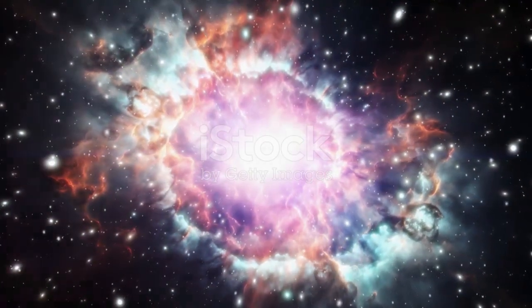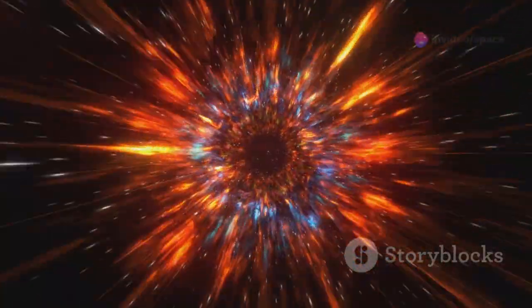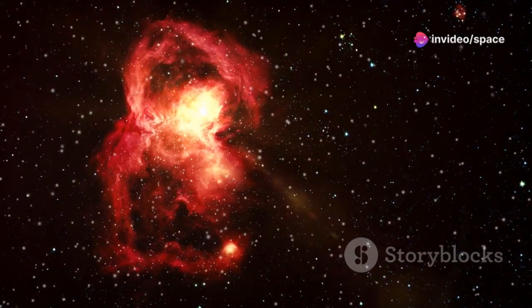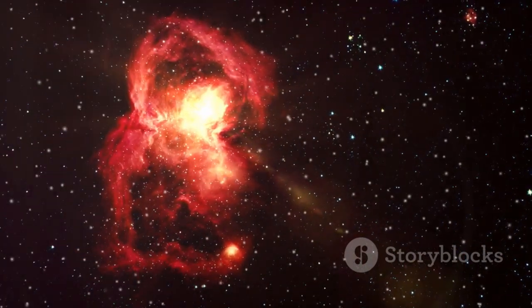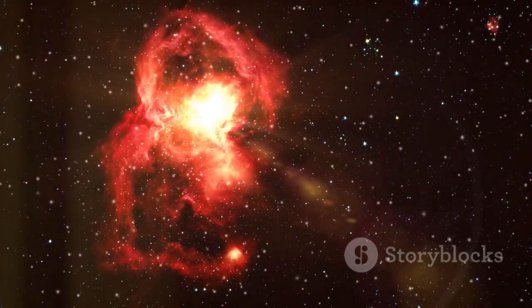Betelgeuse is currently in a state of intense activity. It pulsates irregularly, its brightness fluctuating as it experiences massive convective cells and sheds its outer layers into space. These pulsations are a clear sign that Betelgeuse is nearing the end of its life.